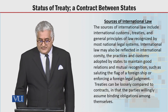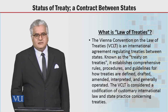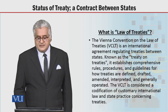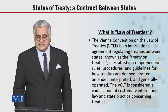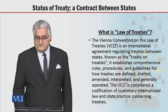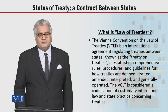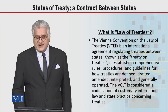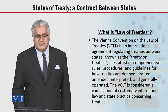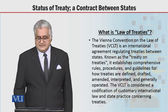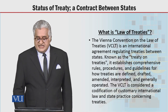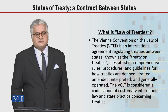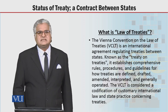Dear students, what is the law of treaties? The Vienna Convention on the Law of Treaties is an international agreement regulating treaties between states and is also known as the treaty on treaties. It establishes comprehensive rules, procedures, and guidelines for how treaties are defined, drafted, amended, interpreted, and generally operated. This very Vienna Convention on the Law of Treaties is considered a codification of customary international law and state practices concerning treaties.